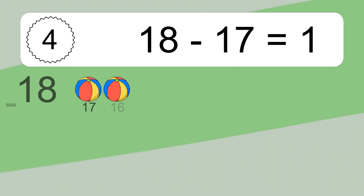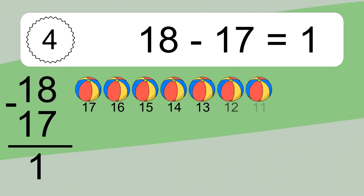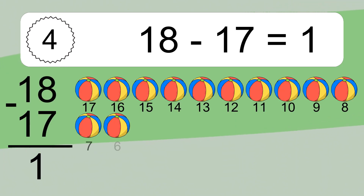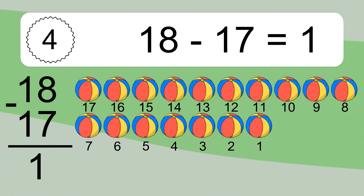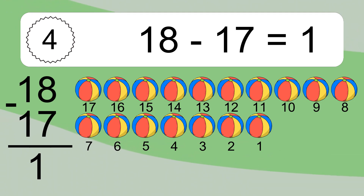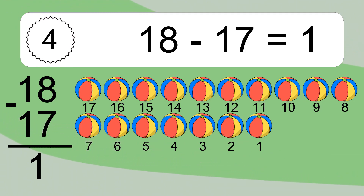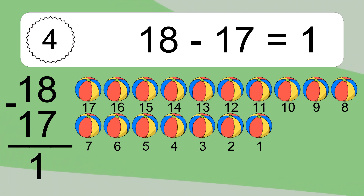18 minus 17 equals what? 18 minus 17 equals 1. Let's count it: 18, 17, 16, 15, 14, 13, 12, 11, 10, 9, 8, 7, 6, 5, 4, 3, 2, 1.